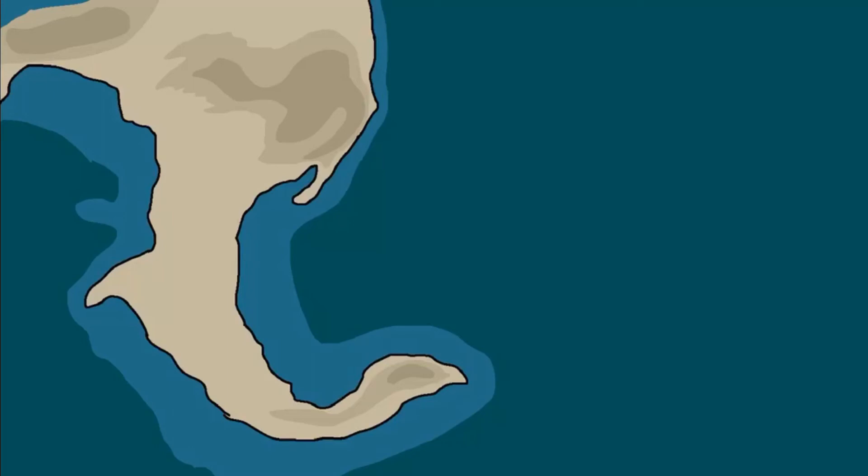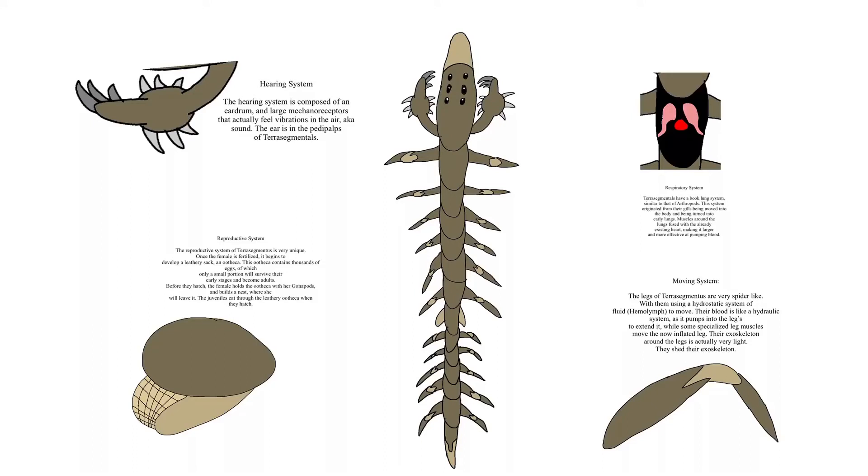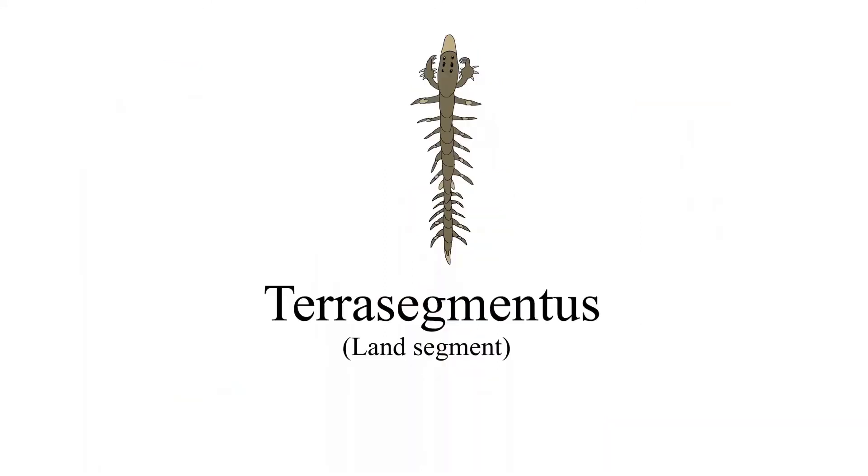They'll be limited to the western continent Endogiswania, and these multisegmentis will be the first true land animals, and I'll give them the name Terra segmentus.